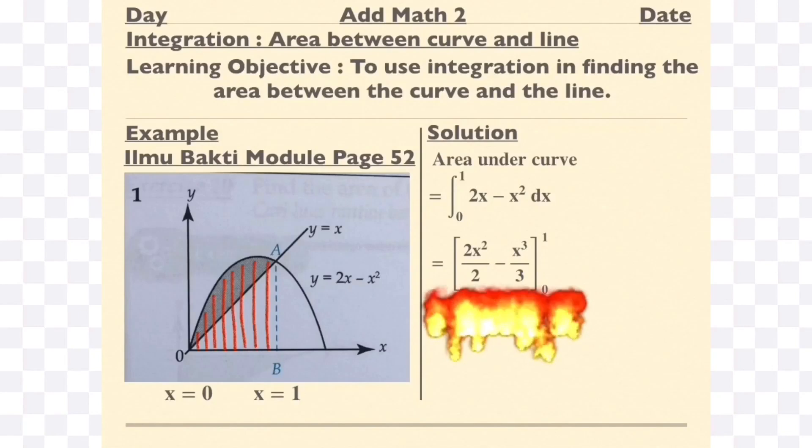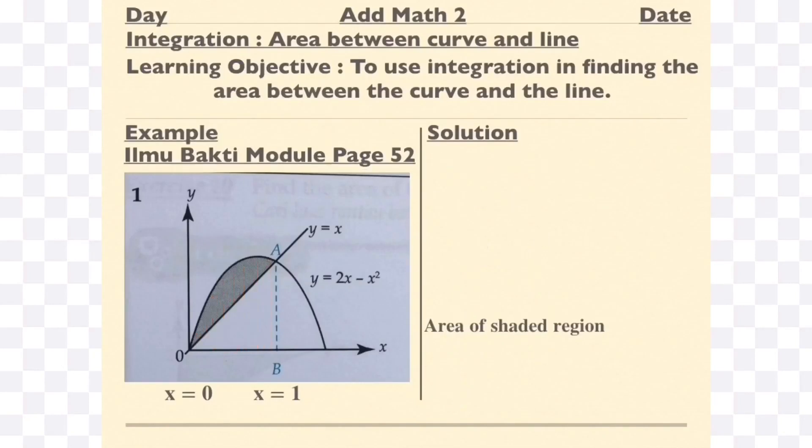You can cancel the 2 if you want, and then you have x cubed over 3. Now, substituting the values of the limits into your equation, you would have the expression just now. You're going to subtract both of them. You will get 2 over 3.